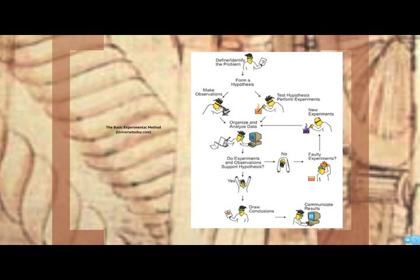Here's a good example of that. We define the problem, form hypotheses, make observations and test them, and then we decide whether our hypotheses were correct or not. We can use this flowchart to help with that. If they were, then we draw a conclusion and communicate the results. You're going to read some of those papers that scientists have written this year. But this is the basic experimental method.